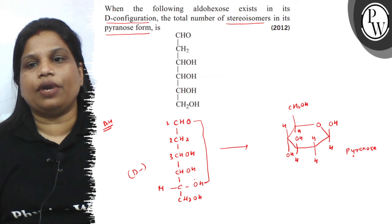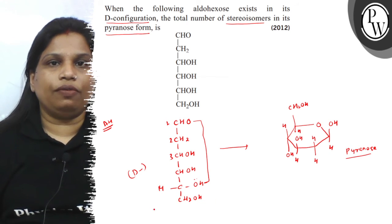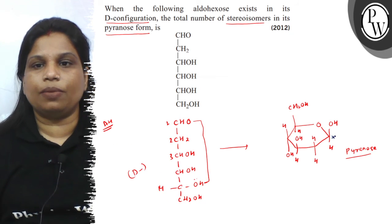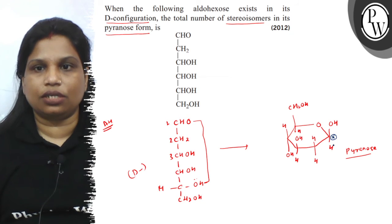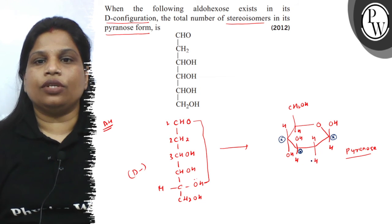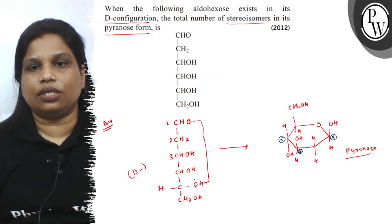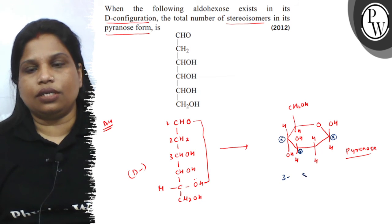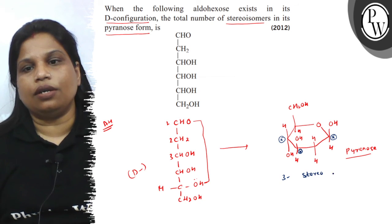And we have to find out the total number of stereoisomers. So, total number of stereoisomers in this is: this carbon is a stereocenter, this is a stereocenter, and this is a stereocenter. So, here there are three stereocenters present.